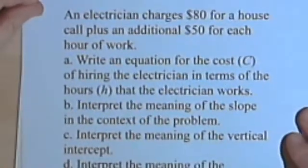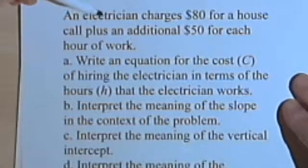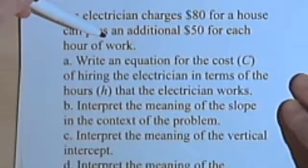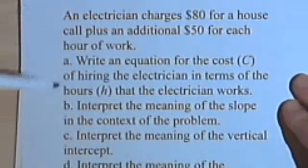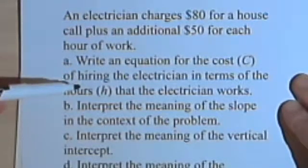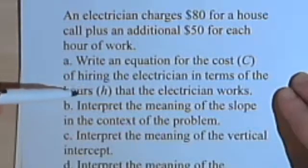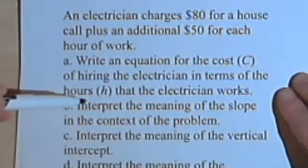Here's the word problem. An electrician charges $80 for a house call plus an additional $50 for each hour of work. The first question: write an equation for the cost, c, of hiring the electrician in terms of the hours, h, that the electrician works.